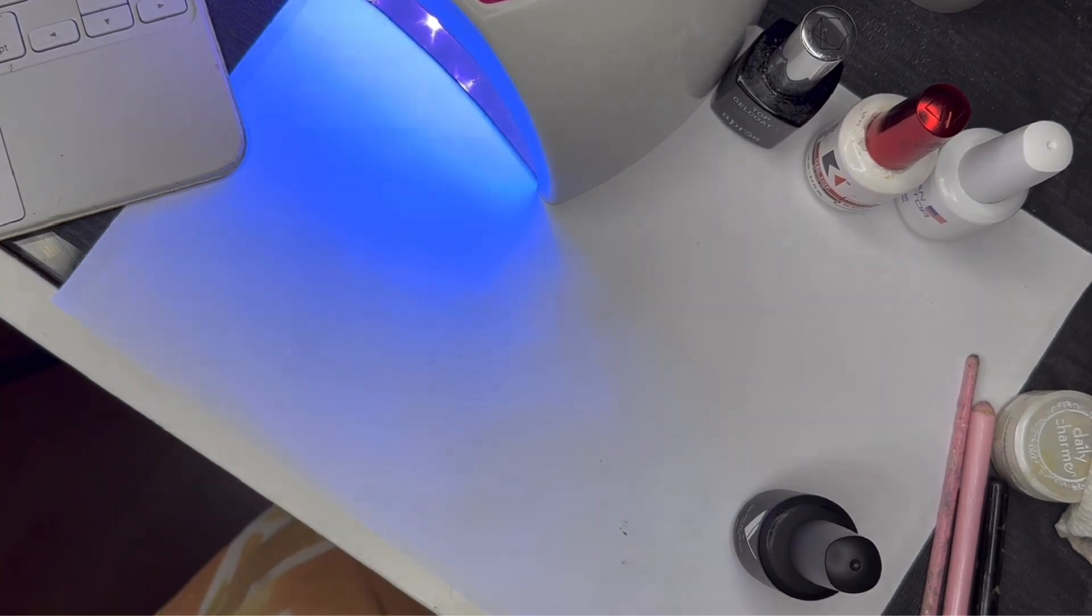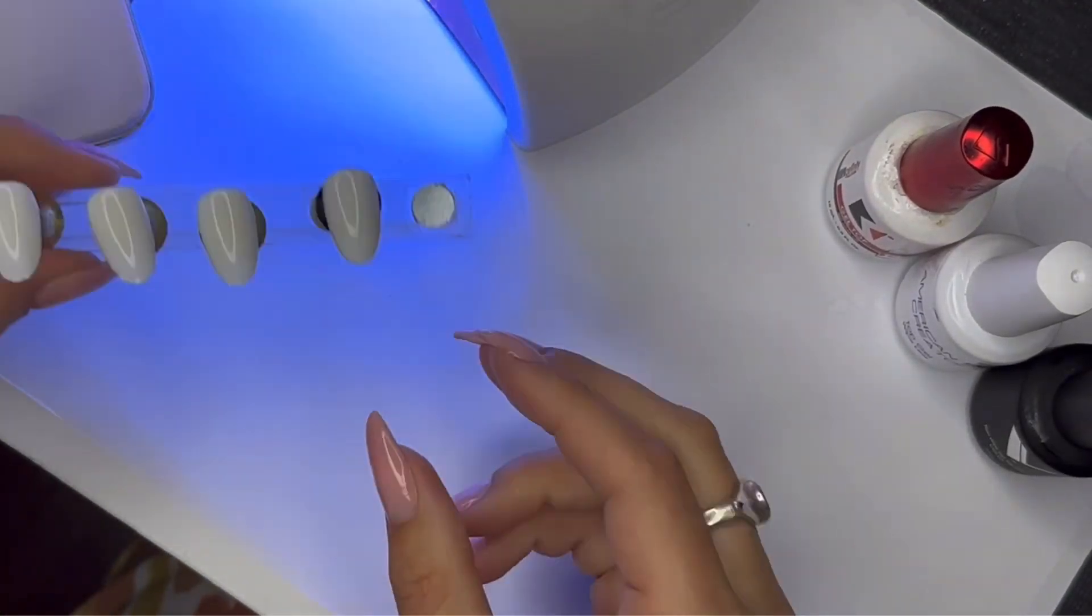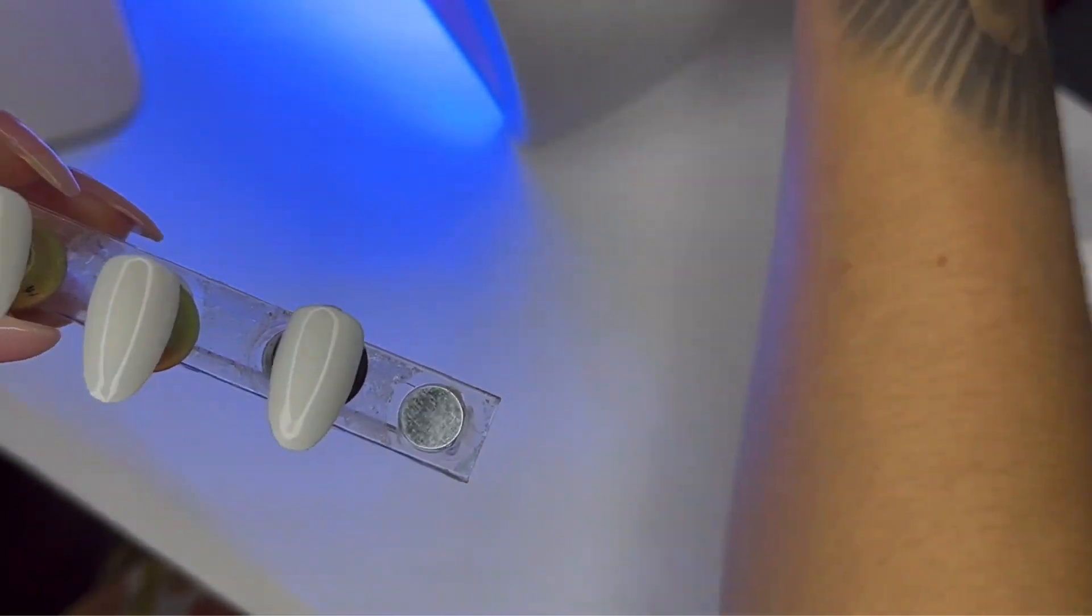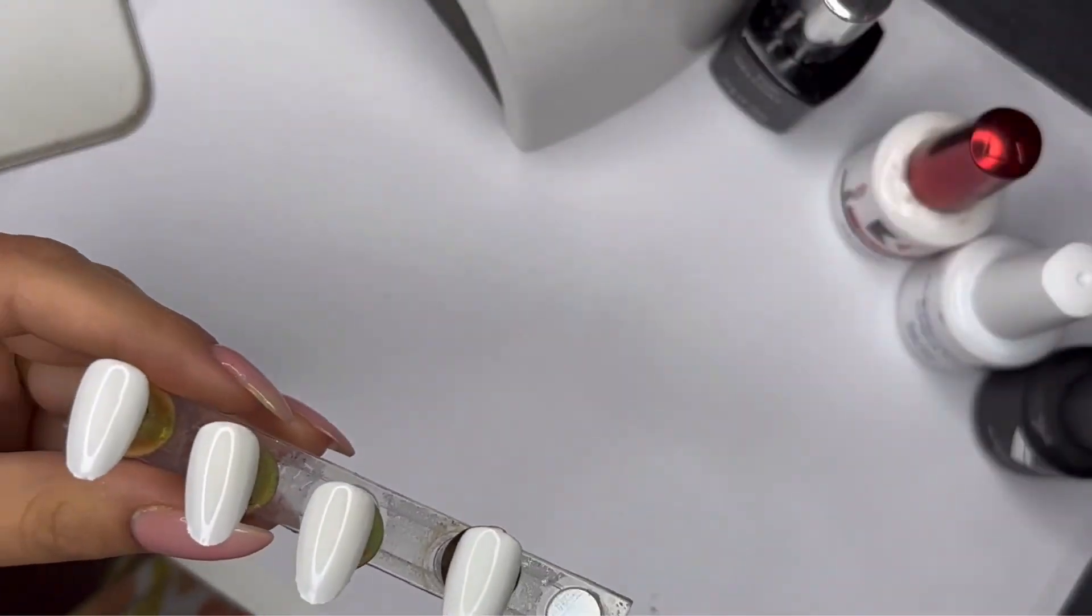Usually you can just see it as soon as you go inside the light with your hand—you'll see that it glows blue under the light, and that means the top coat has UV protection. But it was really hard to record, so I'm going to show you with my handheld UV light.